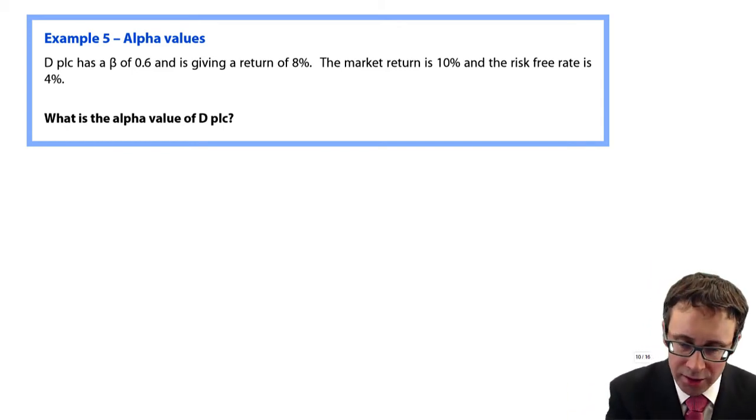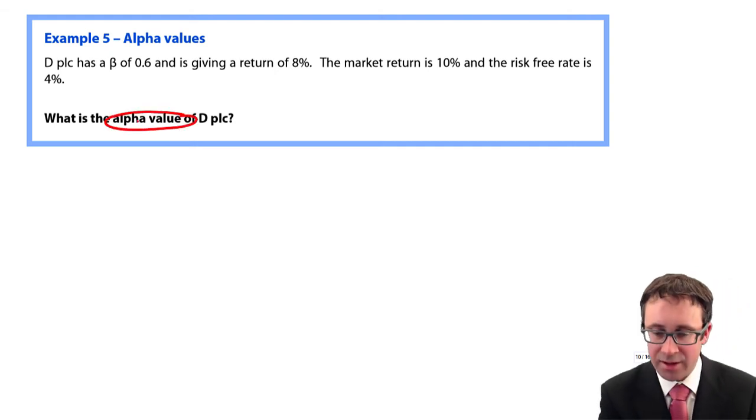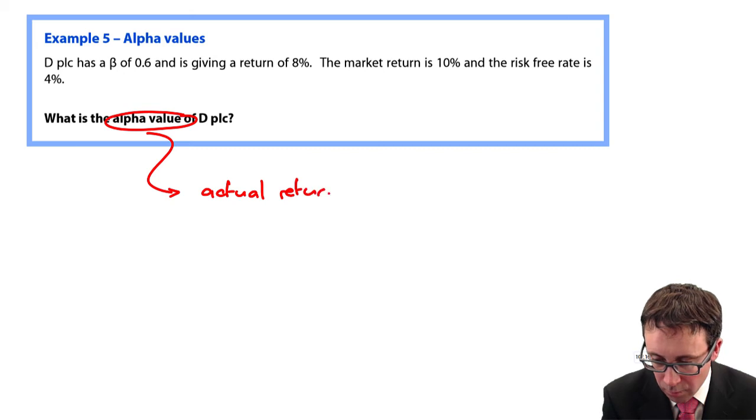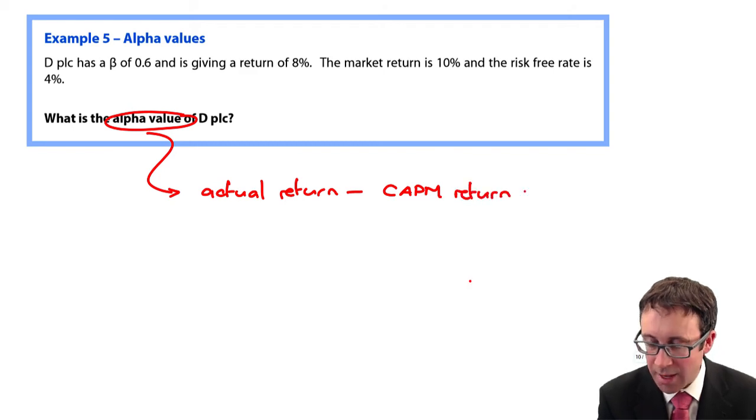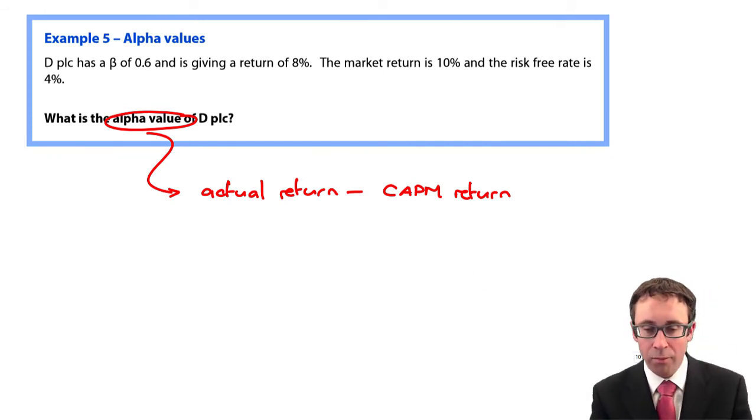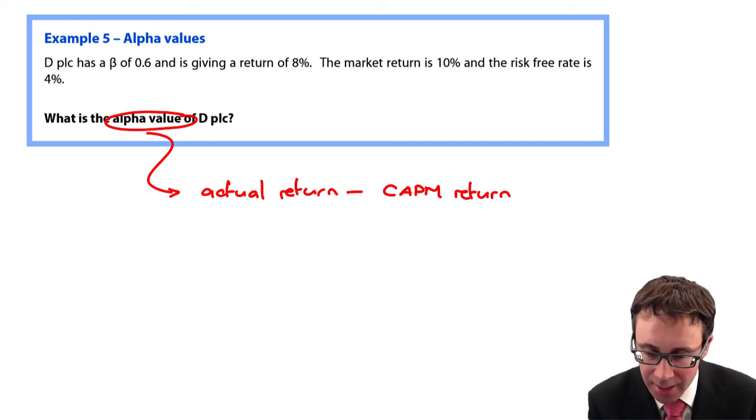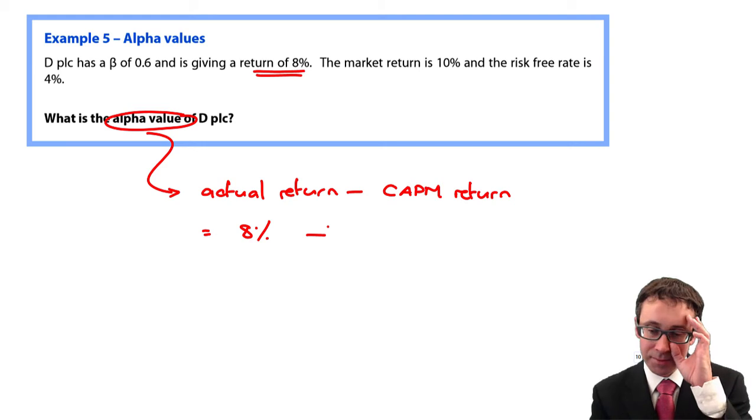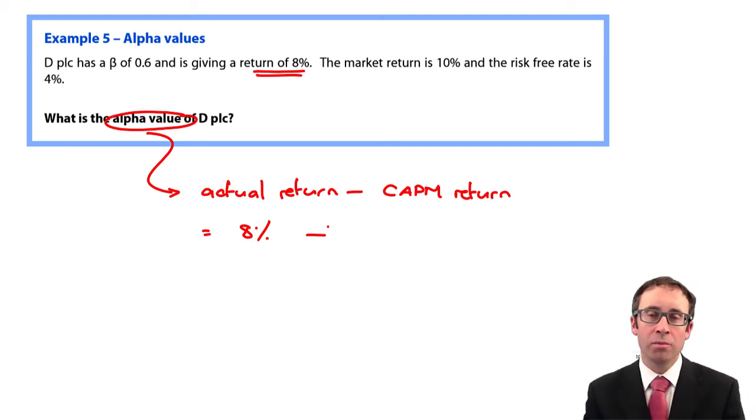So if we go through and look at the question here, it just says, what is the alpha value of DPLC? So that just goes through there and looks at the actual return less your theoretical CAPM return. Now from the question, it says D has a beta of 0.6, which gives a return of 8%. So that return of 8% is what we're actually getting with that beta of 0.6.